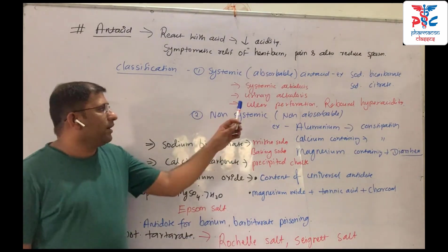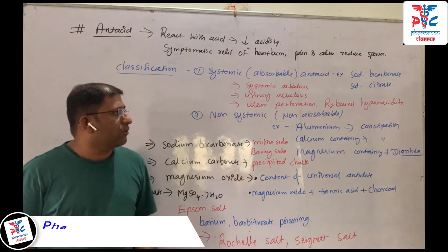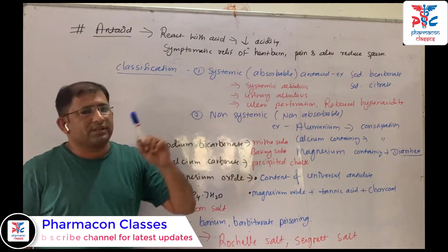There are two drawbacks of systemic antacids. One is the risk of perforation if used at the wrong time, and the other is rebound hyperacidity.